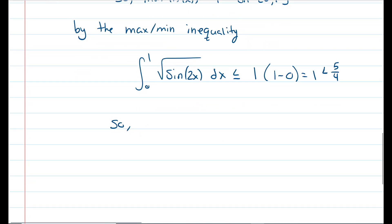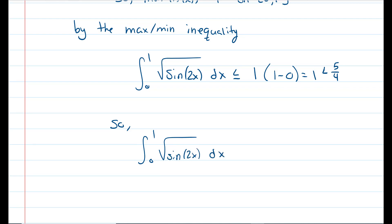So the integral from 0 to 1 of the square root of sine of 2x dx is strictly less than 5 fourths. To get these right, you do need to show all of the work.